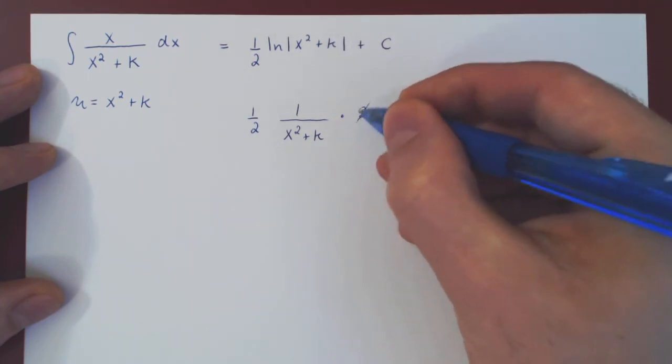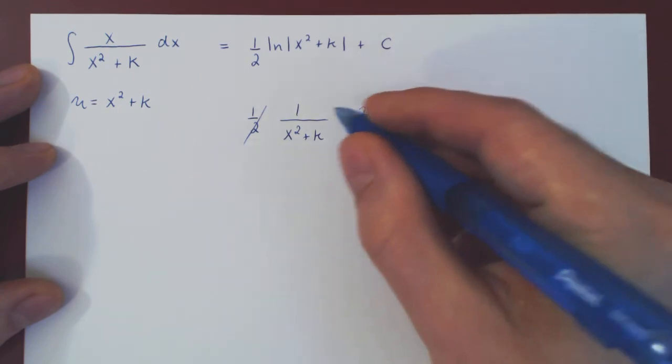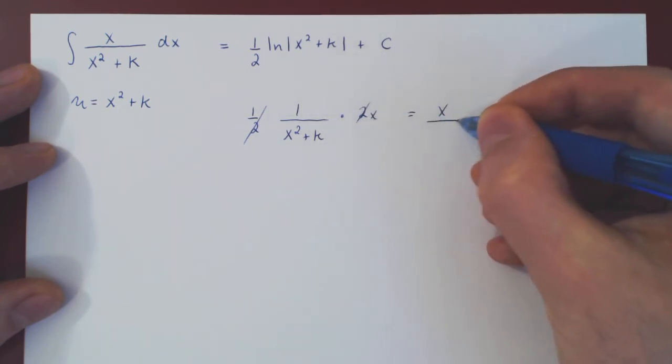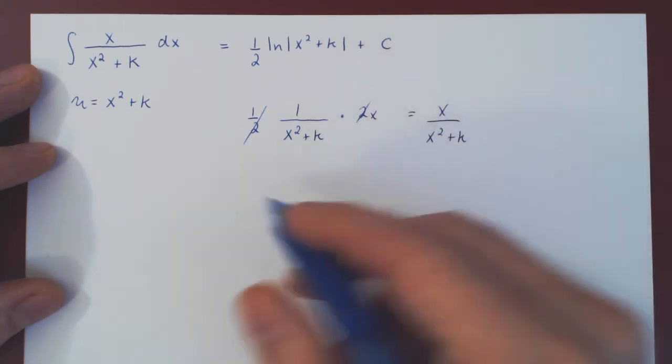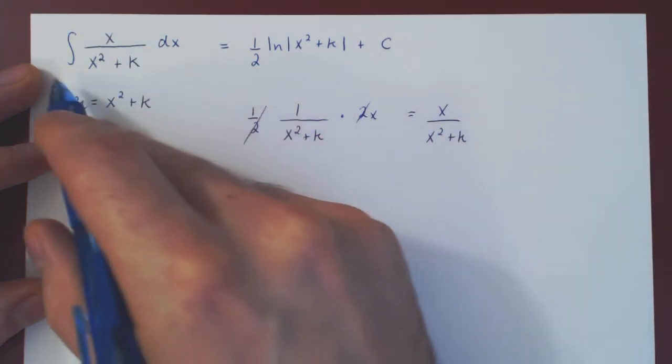As k is a constant, the derivative of k is 0. And now you have what? Well, 2 times a half cancels. And if you're left with x over x squared plus k, which indeed is the function that we were integrating. So there you go.